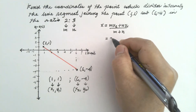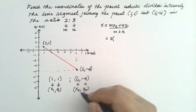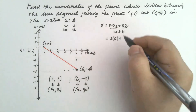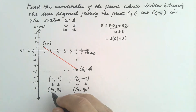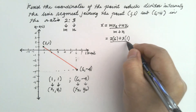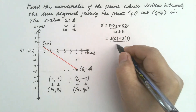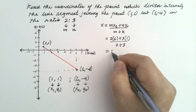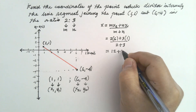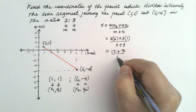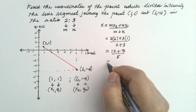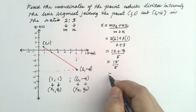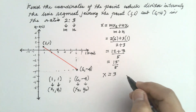Our m is 2 times x₂. Our x₂ is 6, plus n which is 3 times x₁. So this is equal to 12 plus 3 times 1 is 3, all over 2 plus 3 is 5. This is equal to 15 over 5. So 15 over 5 is 3. So x is 3.